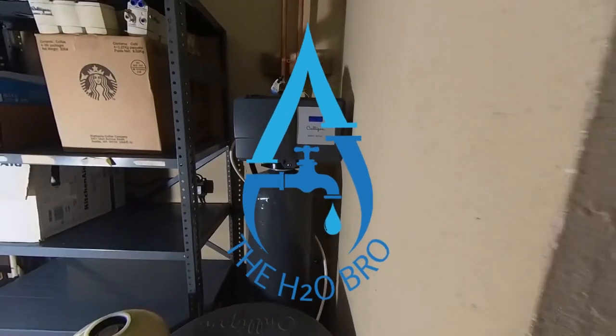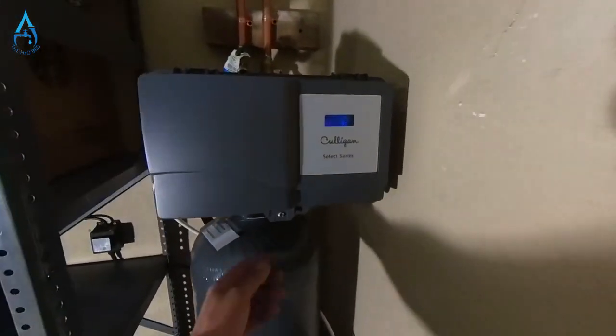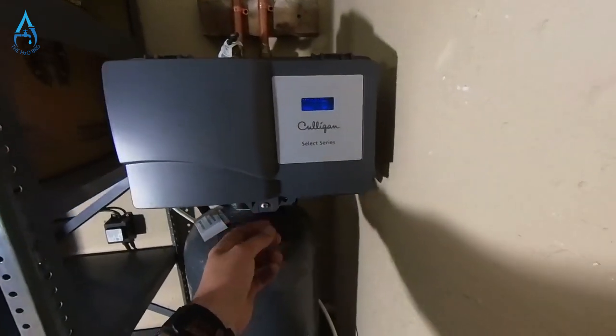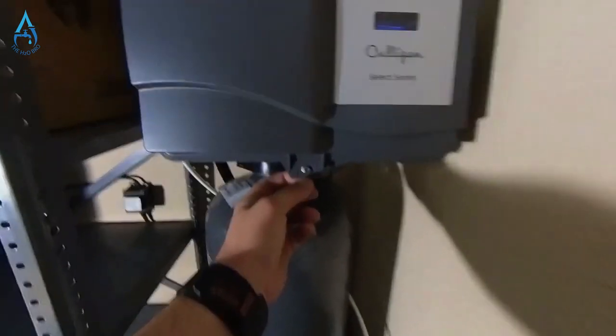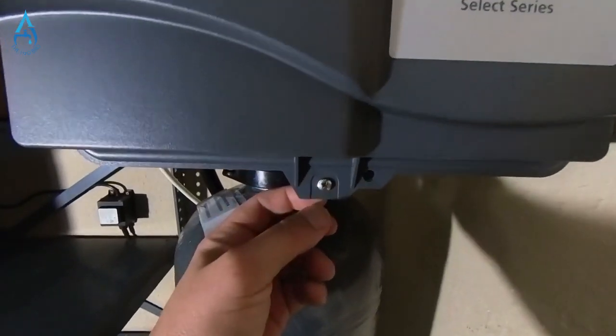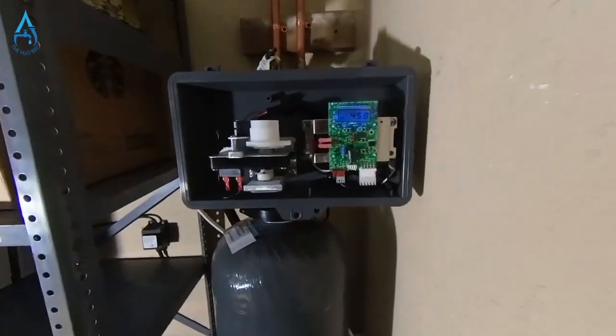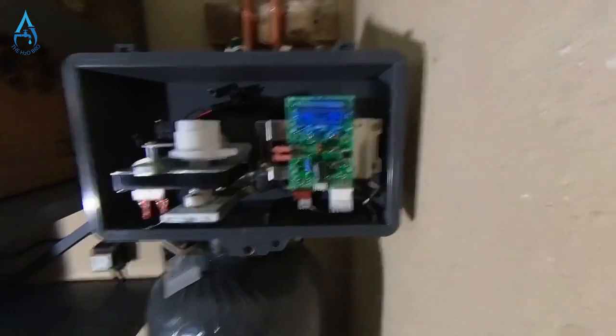Let's get started. Number one, the first thing you're going to check for - you're going to remove the cover here. You have a Phillips screw here that you just unscrew. You're going to check that your water softener is counting your water.